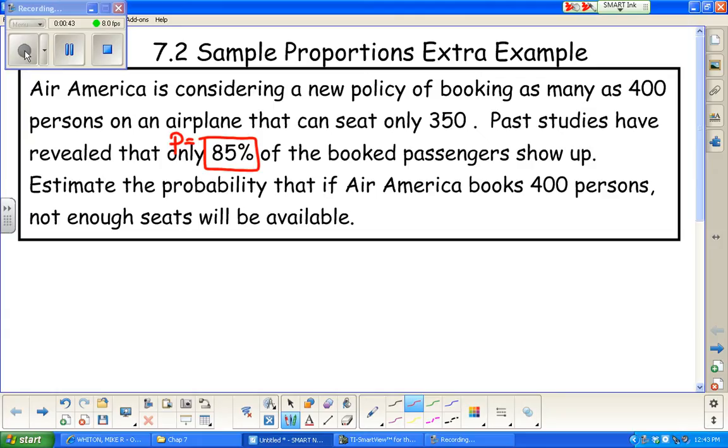So we're asking, what are the chances that the sample proportion is 350 out of 400? That's 0.875. From past experiences, 85% of booked passengers show up. How likely is it that if you take 400 people, you're going to get a sample that has 87.5%? Because if that happens, this thing's overbooked and not enough seats would be available. Let's see how we can tackle this.